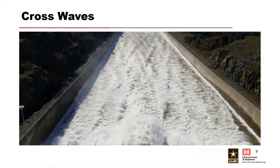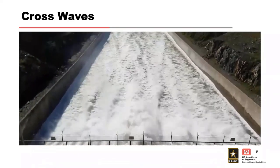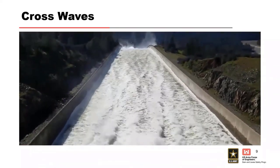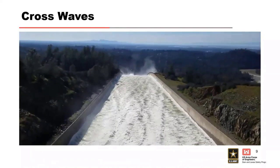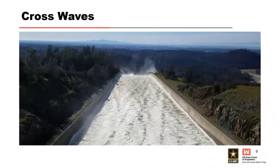This is actually Oroville Dam at about 110,000 CFS. There is no lower chute, so you can see some mist. But the piers alone send out pretty significant cross waves and shock waves that could affect higher discharges and higher flow conditions. Air bulking is also a consideration. It's hard to tell sometimes just by looking at flow if it's actually bulked for the full depth or if it's just surface aeration. In this case, it's really just surface aeration, mainly associated with the piers.